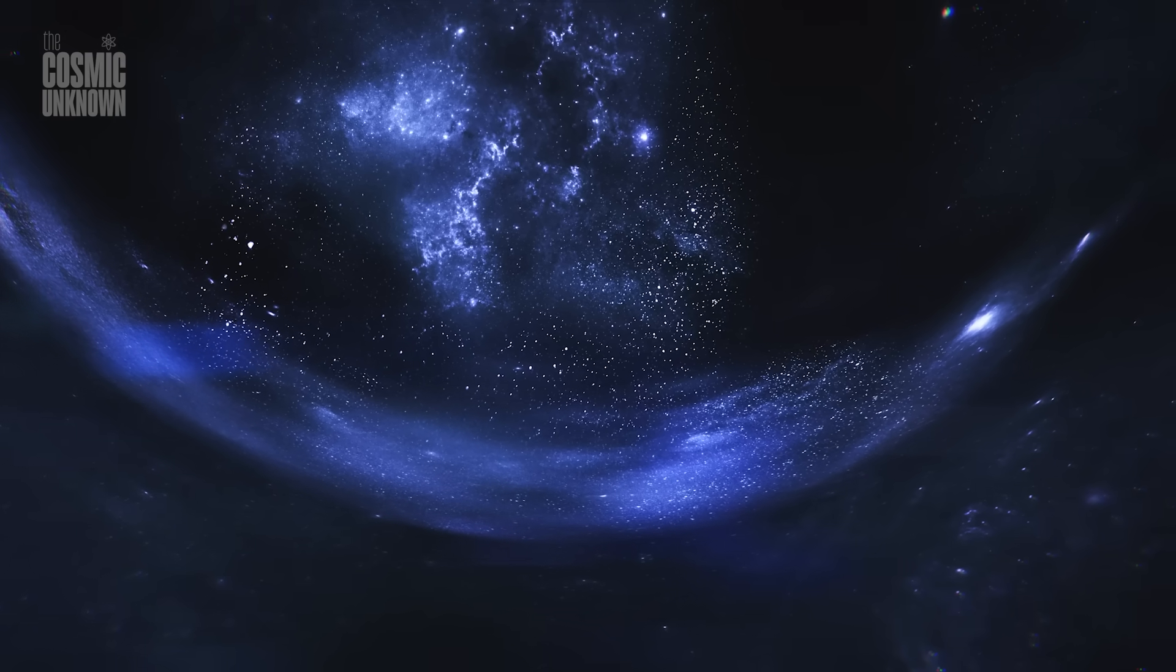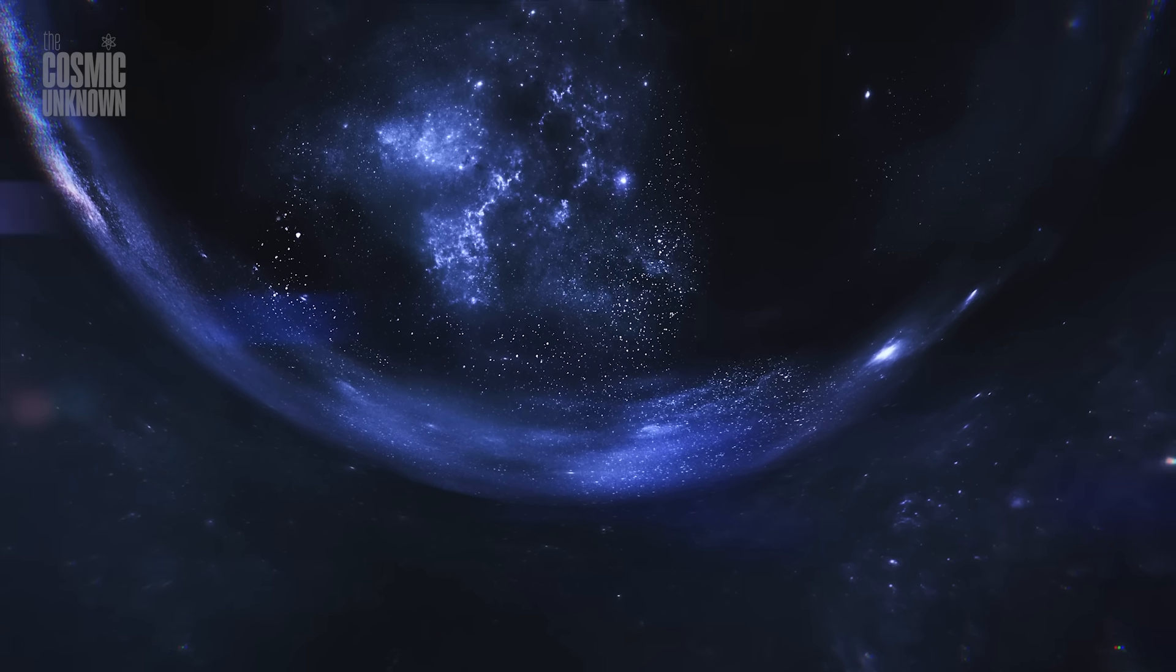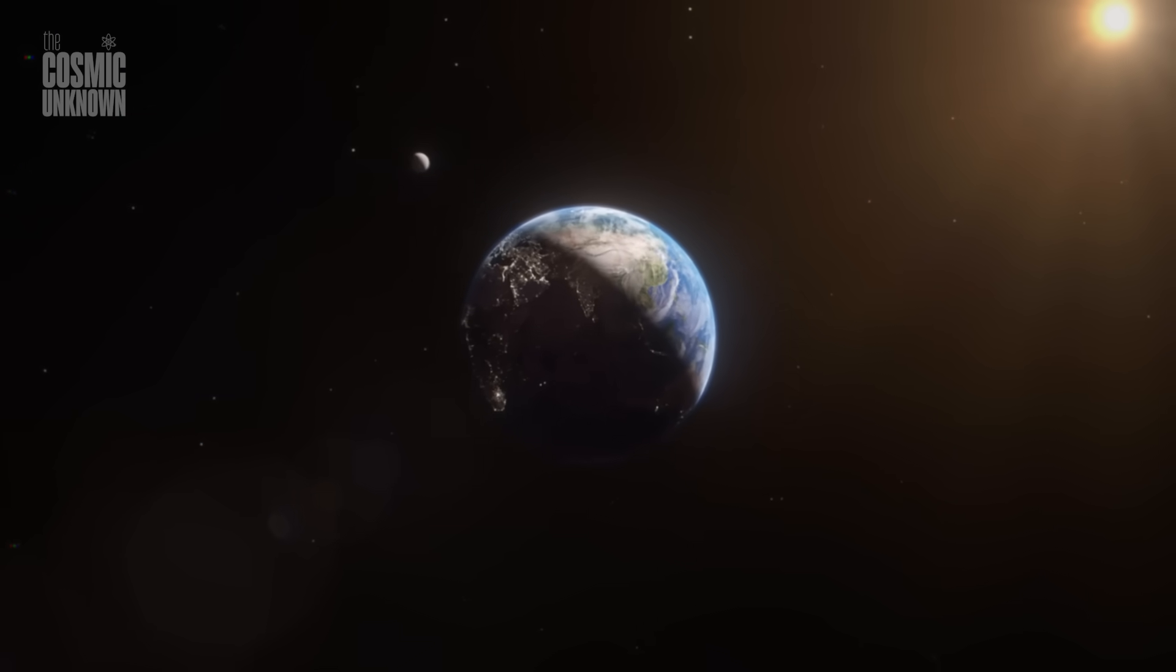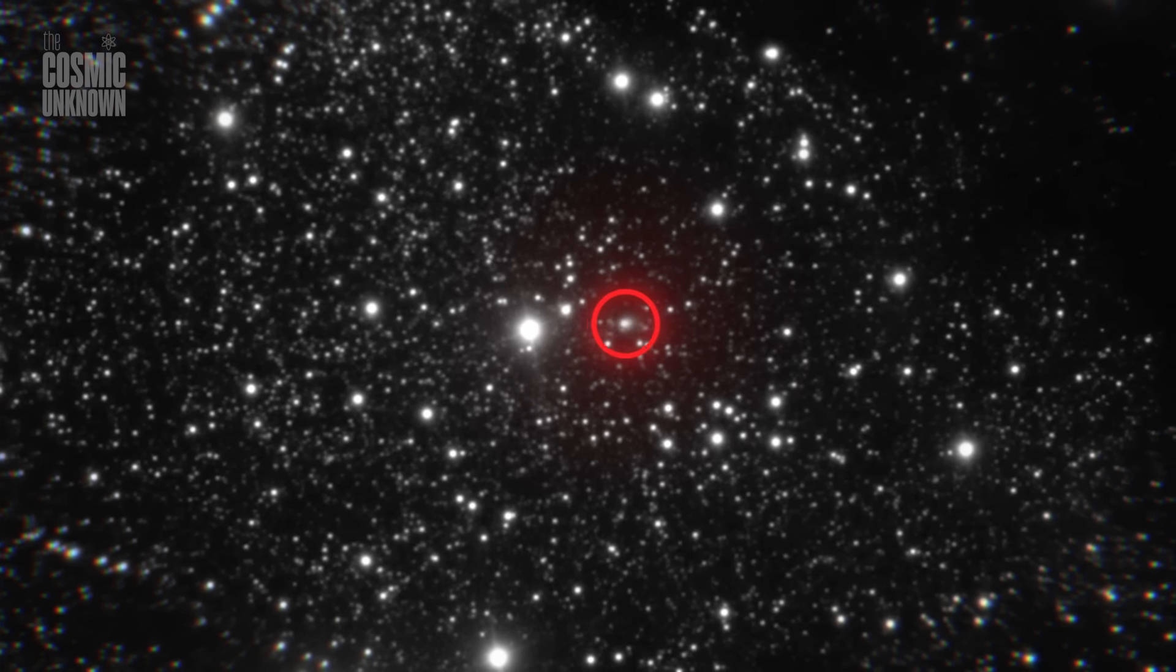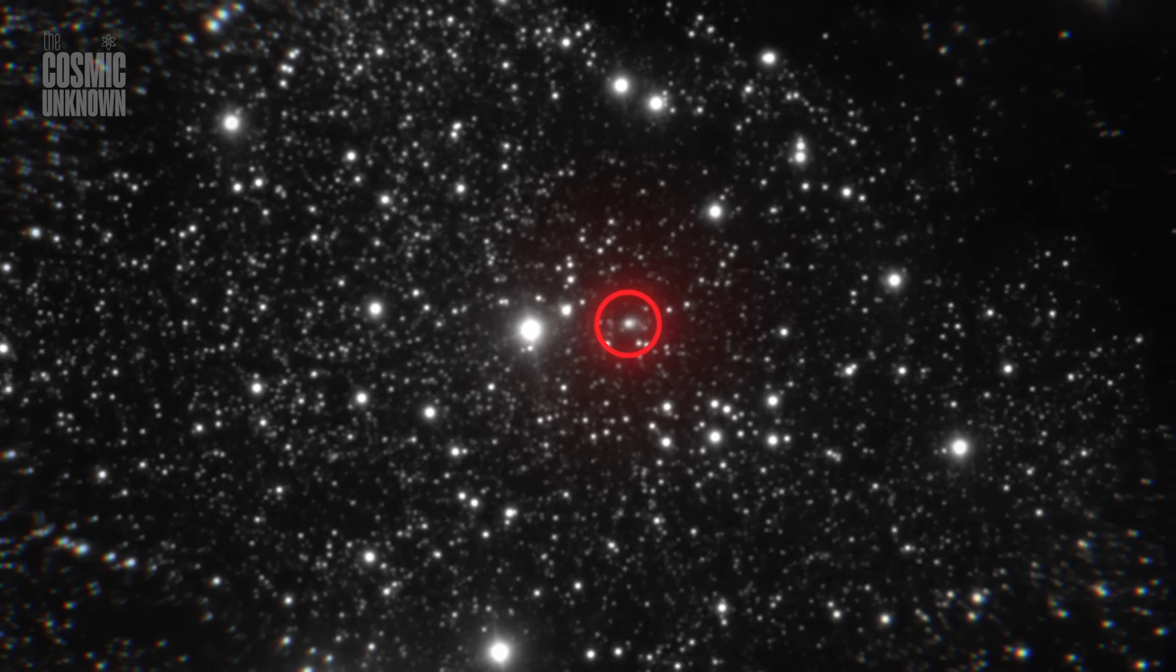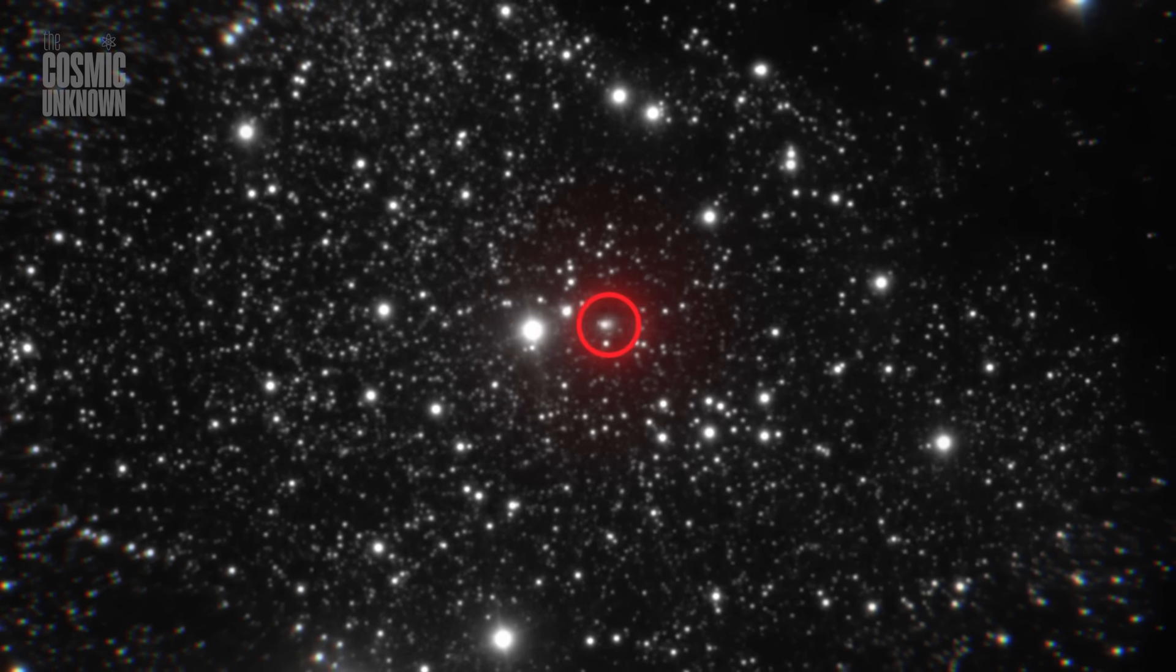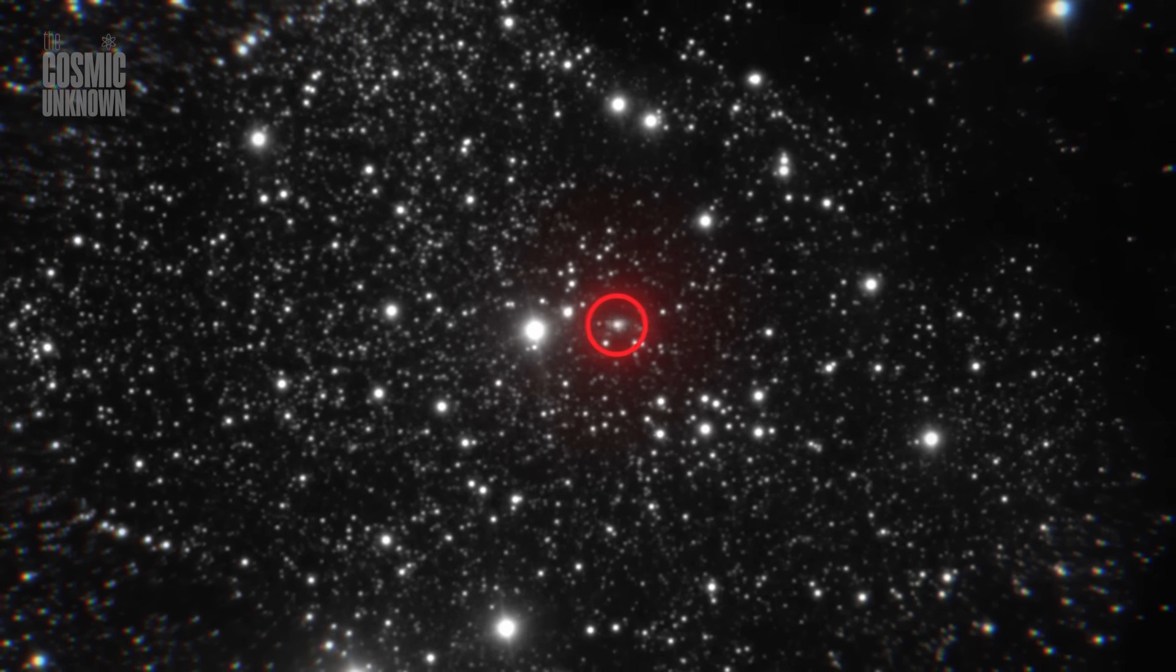It's also retrograde, crossing the solar system against the flow of the planets. Most concerning, this is the third interstellar object we've detected in just eight years. Before Oumuamua, we'd seen zero. Now, we're seeing them more often and always too late. This sudden cluster has no clear explanation.